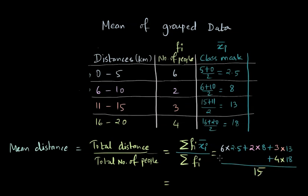So if we compute the numerator here, we get 142 divided by 15, and so we get the mean as 9.46 kilometers.